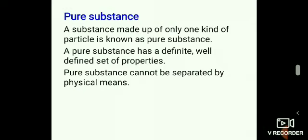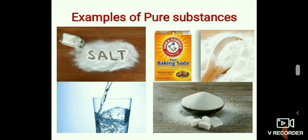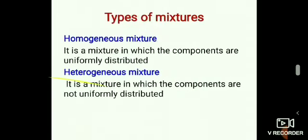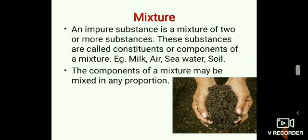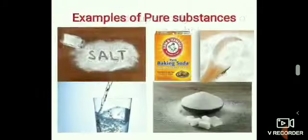For example, take some sugar and soil. We will find that the colour, shape, and size of the particles of sugar are the same. But the soil contains particles of different colours, shapes, and sizes. For example, the soil contains clay particles, some grass particles and even some dead insects. Sugar, which contains particles of only one kind, is called a pure substance.